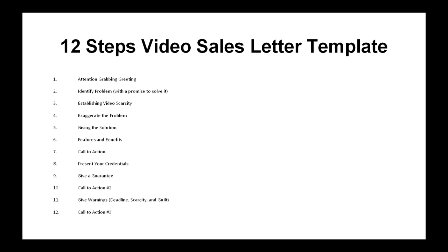Step ten: call to action number two. This step should appeal to the prospect's logic. You've been building up to this call to action throughout the two previous steps, so you simply need to say something like, 'Based on the results you've seen and my risk-free offer, click the order button below.'